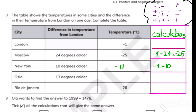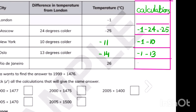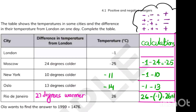Oslo is 13 degrees colder, so minus 1 and minus 13 — add them: 13 plus 1 is 14, and it's negative, giving minus 14. The next temperature is positive 26 degrees warmer. Since we need to find the difference: write 26 first, then the minus sign, then minus 1. Both negative signs add: 26 plus 1 is 27 degrees warmer.